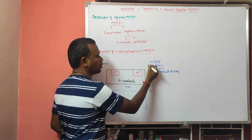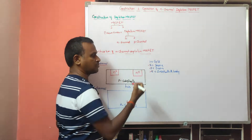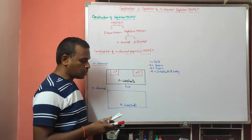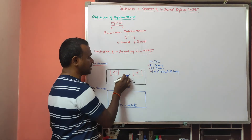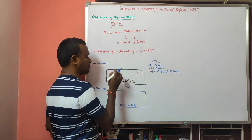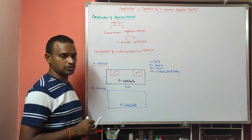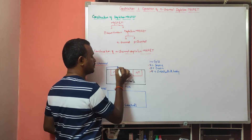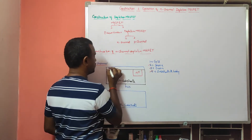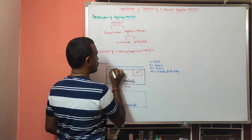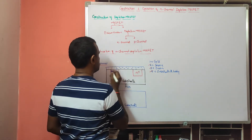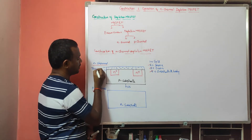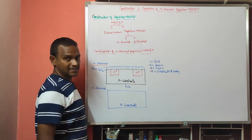Between the source and drain, the gate terminal needs to be formed. To form the gate, between the gate and substrate a SiO2 layer must be present — it is compulsory. We form a thin SiO2 layer on the substrate, between the gate and the substrate. The SiO2 layer is thin because it forms a capacitive effect.